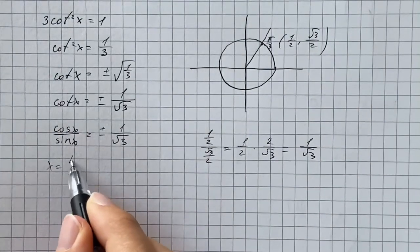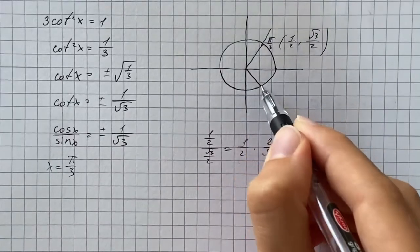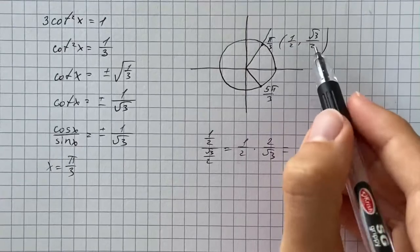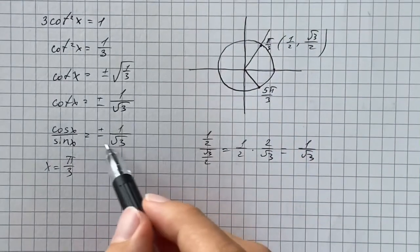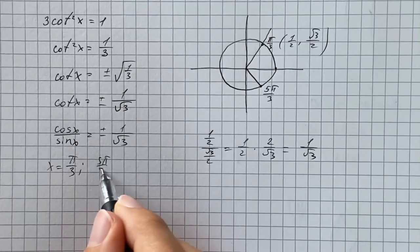Therefore pi over 3 is going to be our first solution. As well, it's going to be 5 pi over 3, which has the same coordinates but different signs, but we are allowed to have negative ratios.